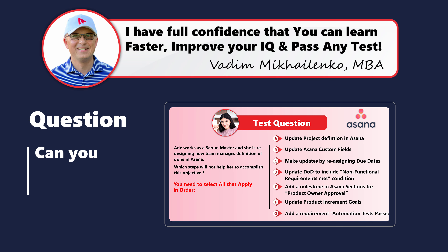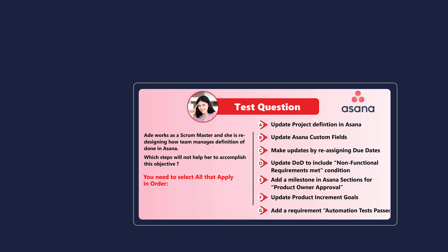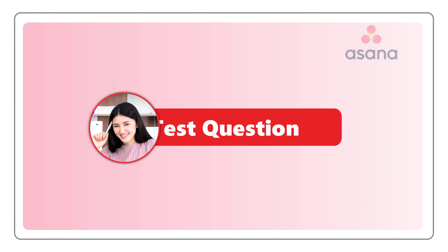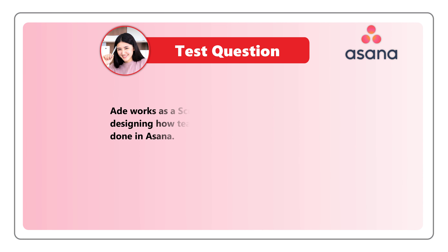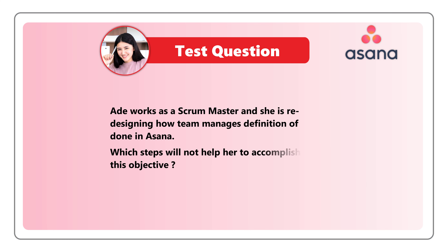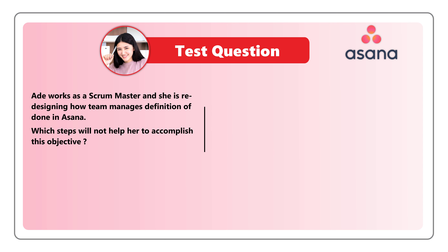Here's one of the advanced questions we saw on the test recently. Eddie works as a Scrum Master, and she is redesigning how a team manages definition of done in Asana. Which step will not help her to accomplish this objective? You are presented with 7 different choices, and you need to select all that apply in order.